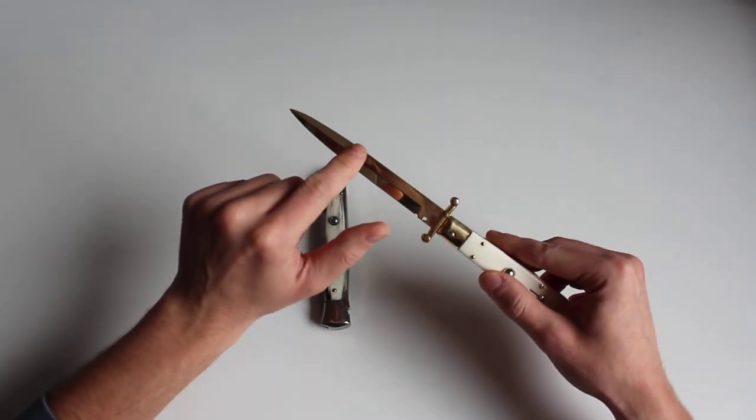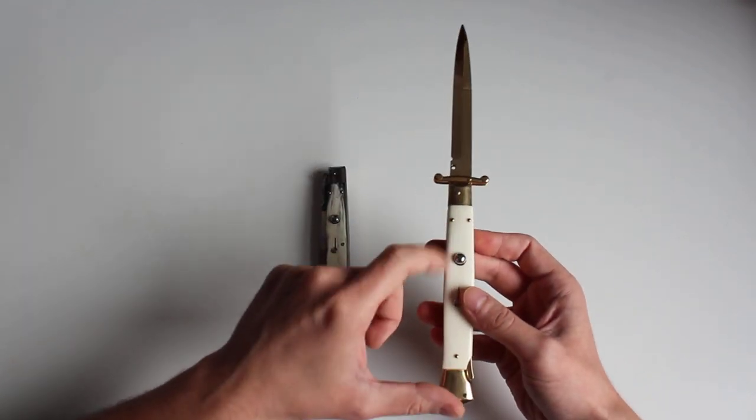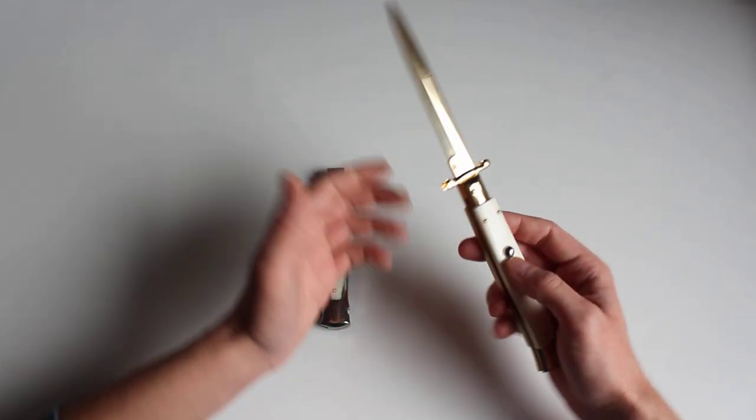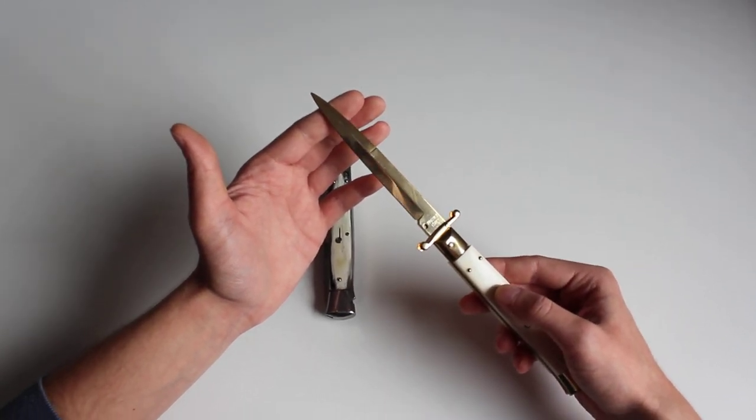Blade type is spear point or bayonet. Both terms are correct. Ferrules are made of gold-plated stainless steel. Generally, the choice is really wide and everyone will find something for themselves according to their preferences.